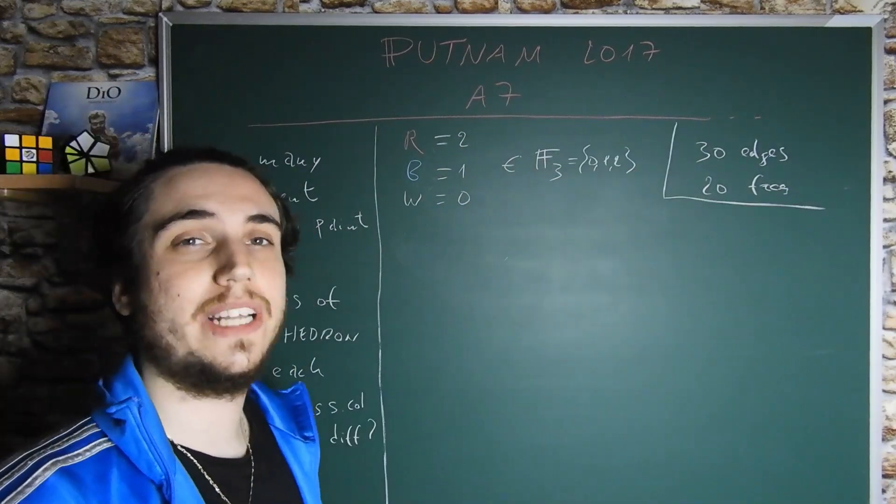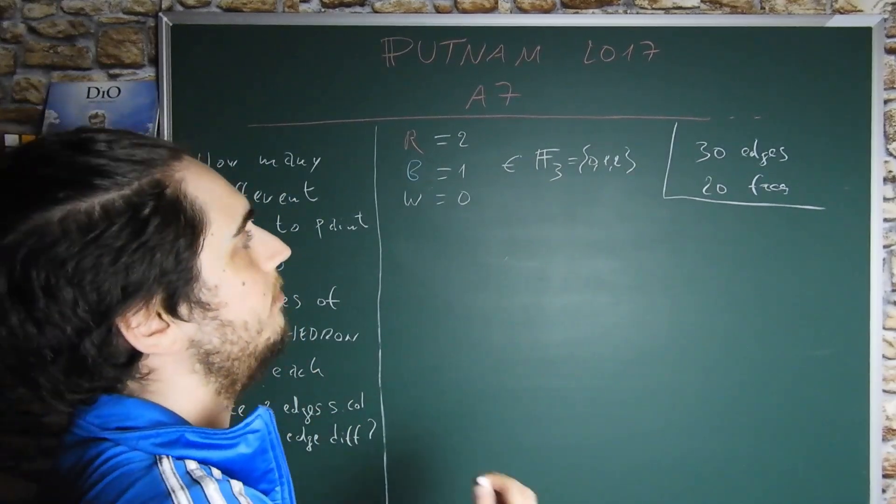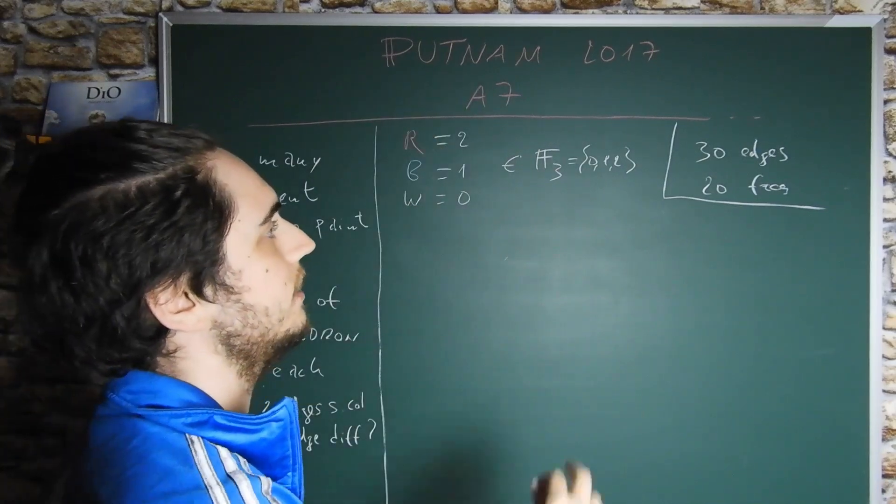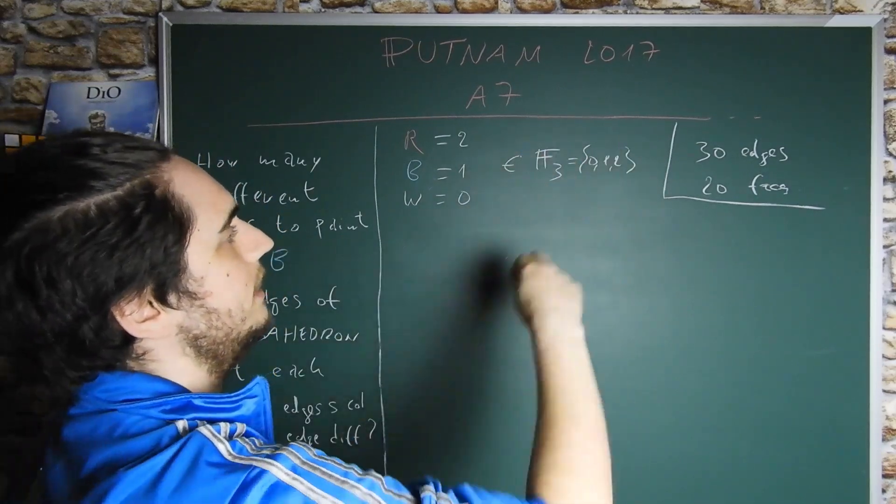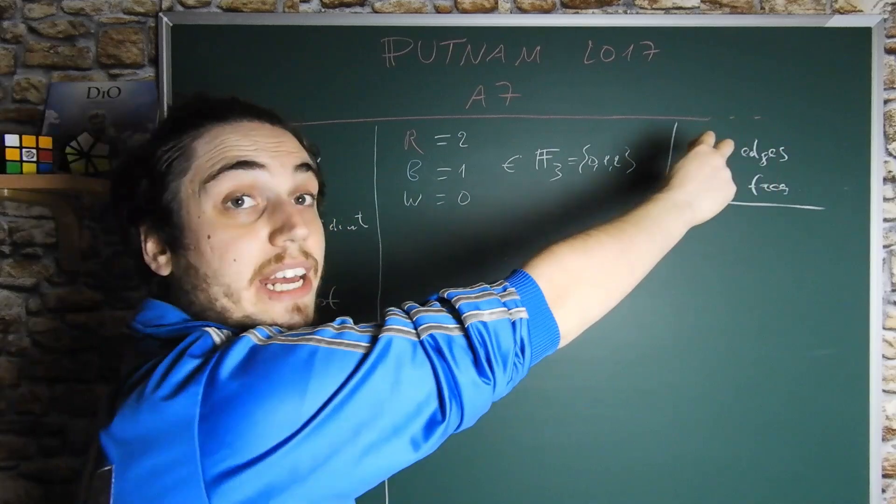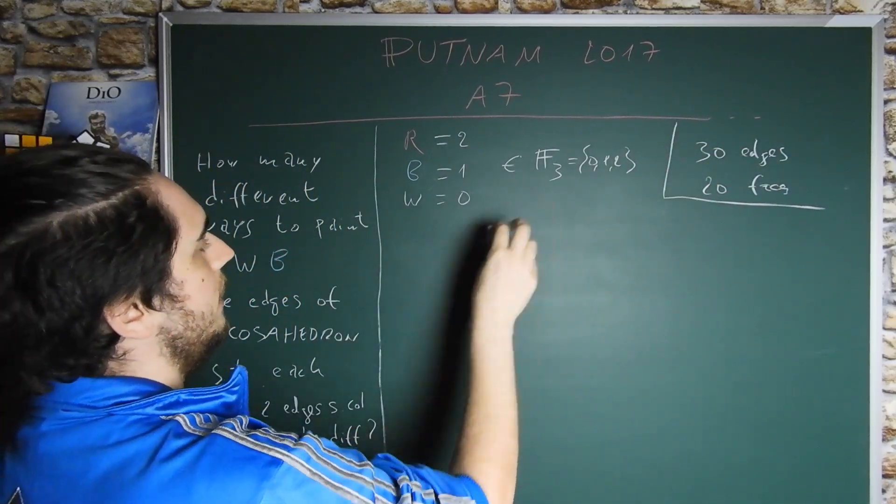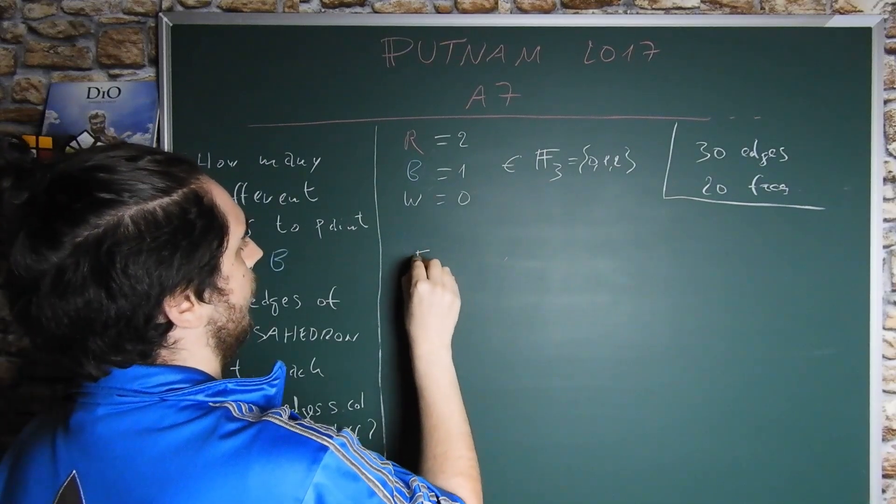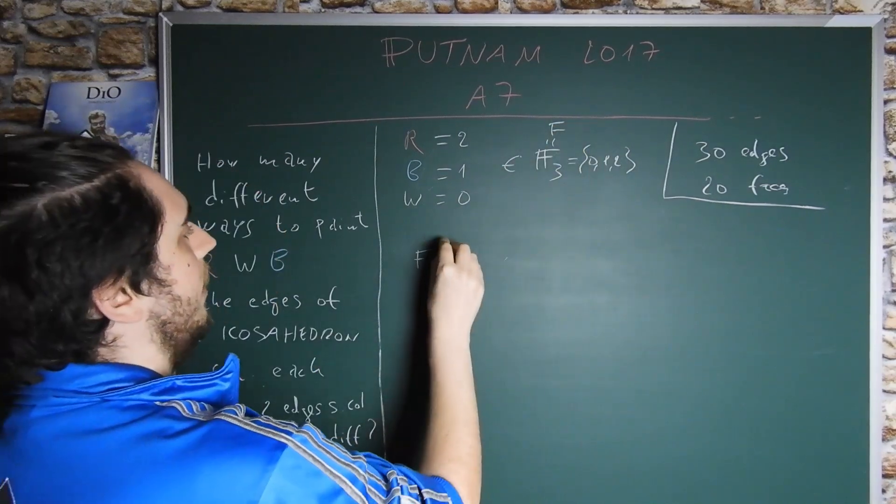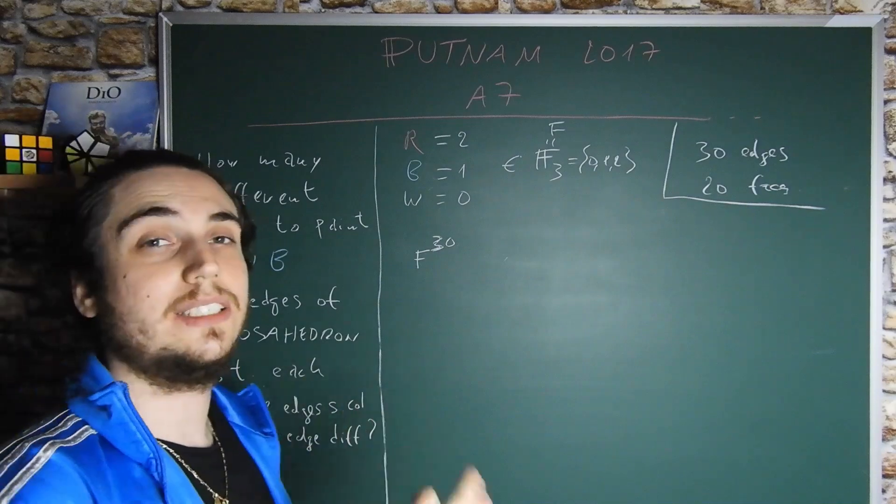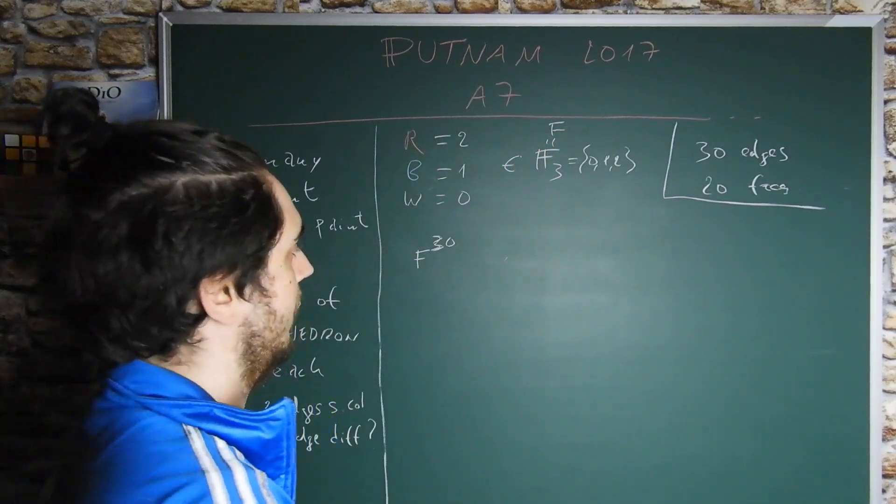Now we can ask how many possible colorings without these conditions there are. In this case, every possible color can be chosen among these three numbers. There are 30 edges, so the set of all possible coloring is F3 to the 30. This is a vector space with 3 to the 30 elements.